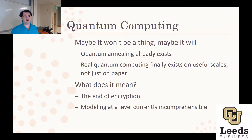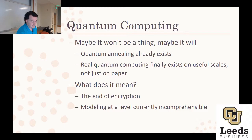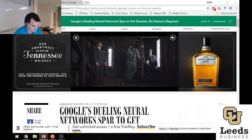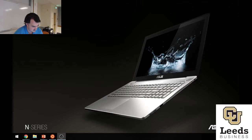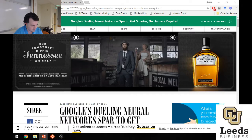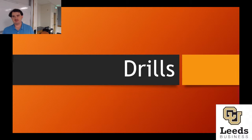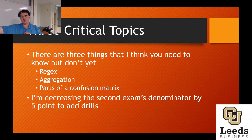I will go over the culture and society bit next class. Based on the exams, I am decreasing the denominator by five points from your DataRobot exam portion — numerator stays the same, denominator goes down. What am I doing with those five points? I am going to create five drills for you. All five will have the same three kinds of questions — I'm just going to change a couple of details. It's going to be the first ten minutes of class on three of these dates, the last ten minutes on two of them.